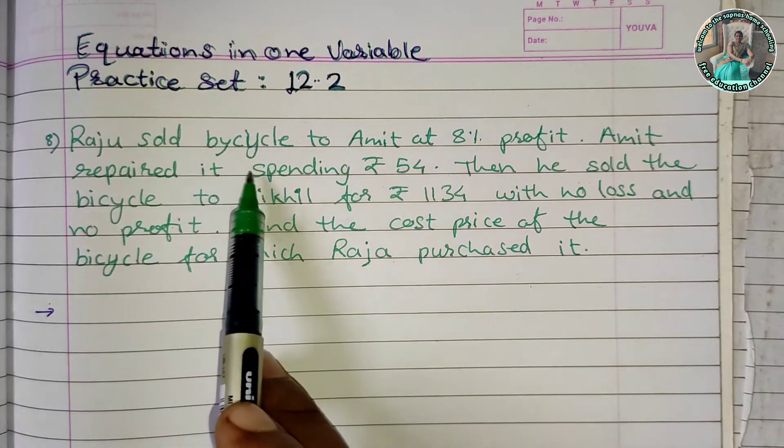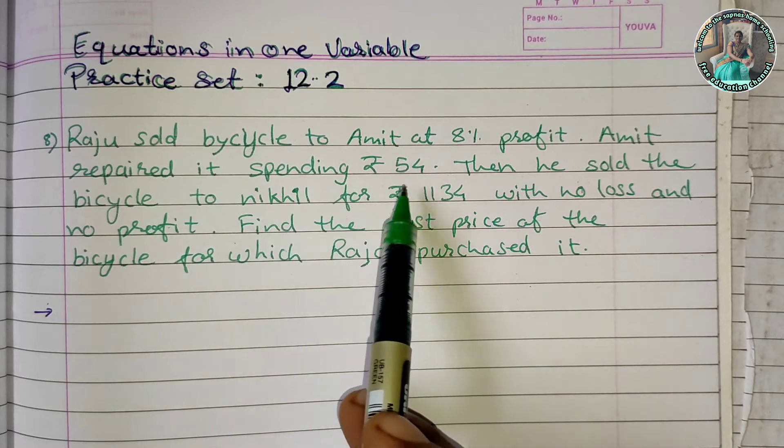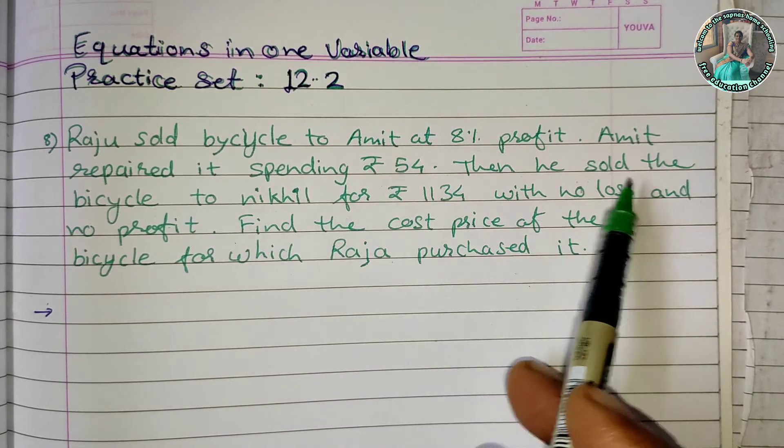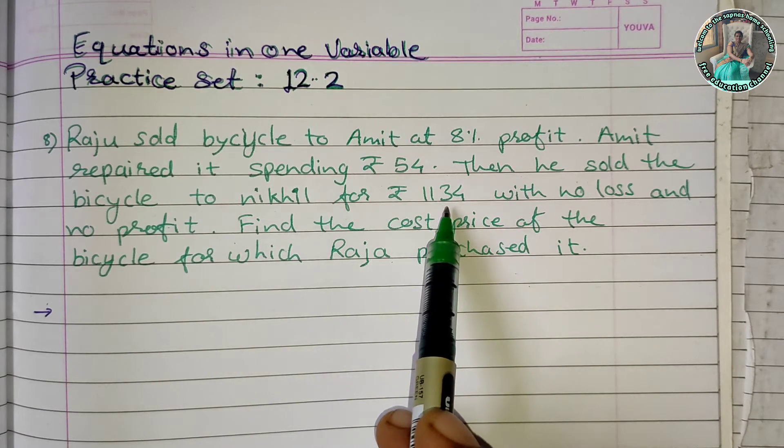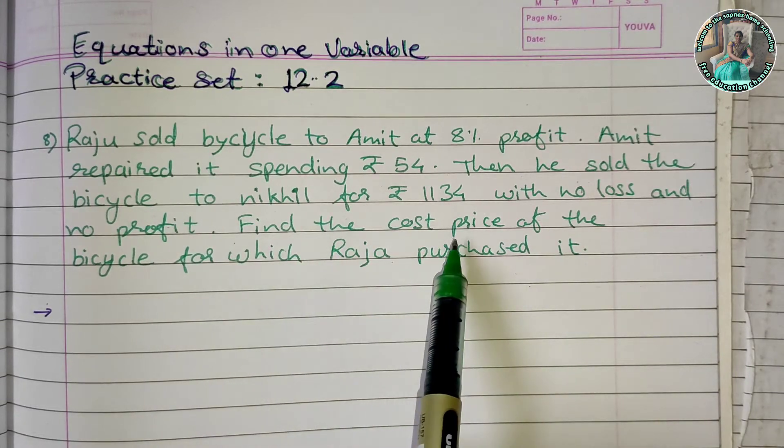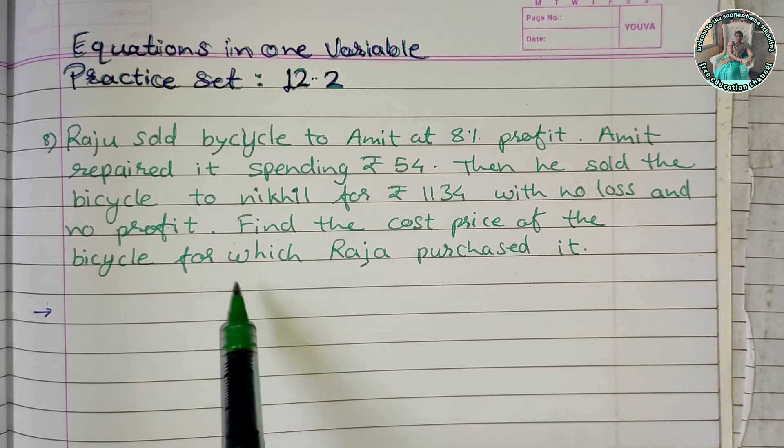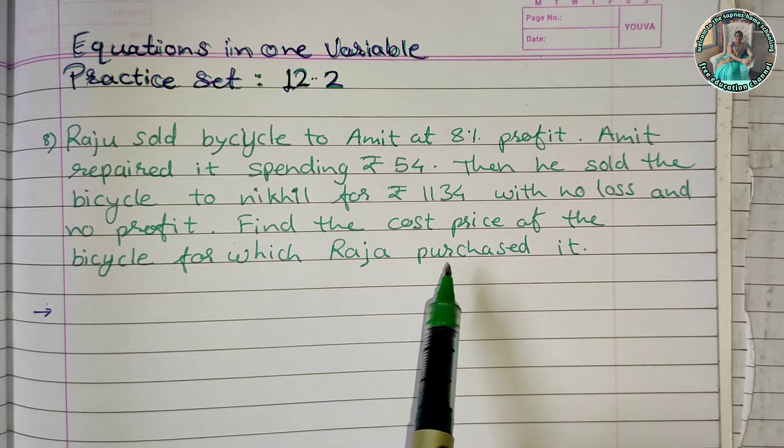Raju sold bicycle to Amit at 8% profit. Amit repaired it spending Rs. 54. Then he sold the bicycle to Nikhil for Rs. 1134 with no loss and no profit. Find the cost price of the bicycle for which Raju purchased it.